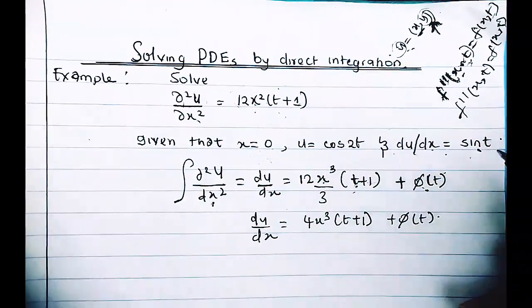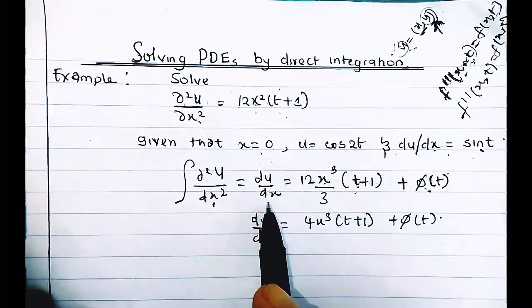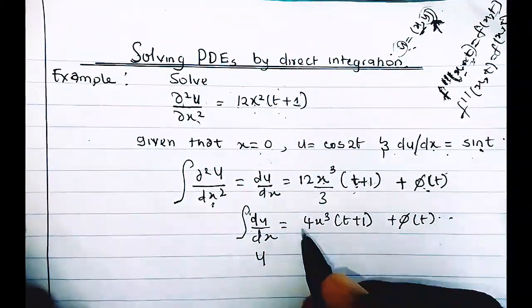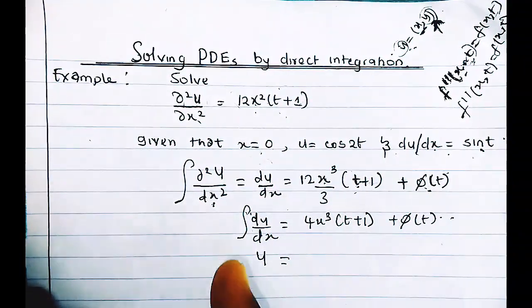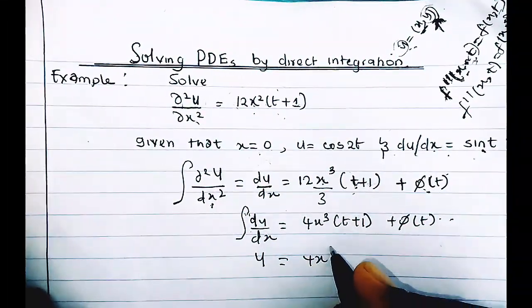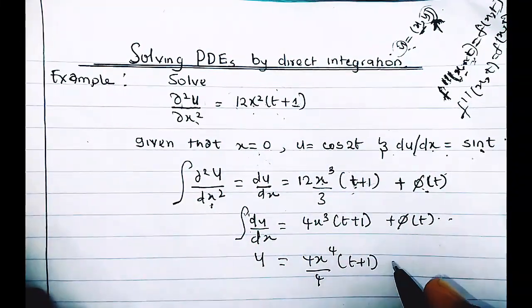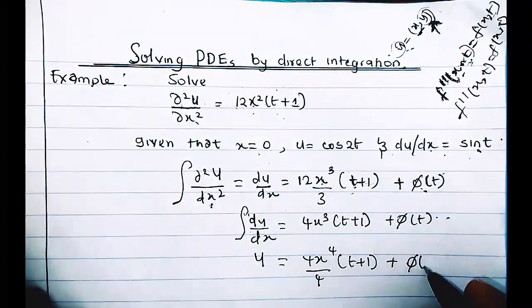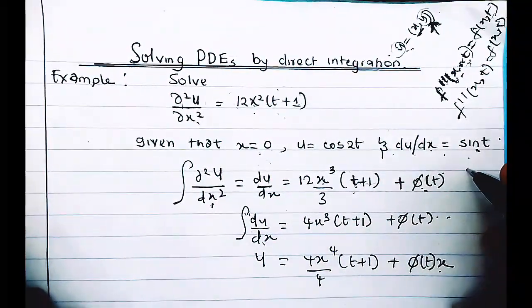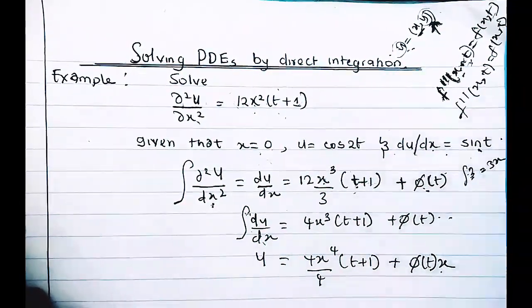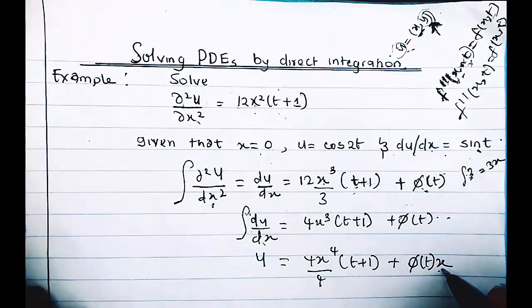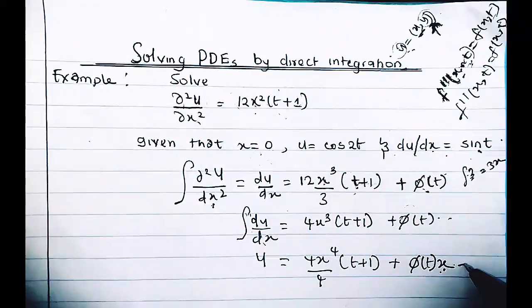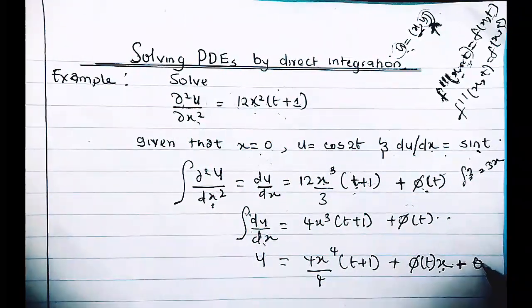Now integrating again: when we integrate du/dx with respect to x, we get u. Integrating 4x³(t+1) gives x⁴(t+1). For the constant φ(t), since it is a function of t being integrated with respect to x, we assign x to it, giving φ(t)·x. Then we add a second constant of integration, θ(t), also a function of t.